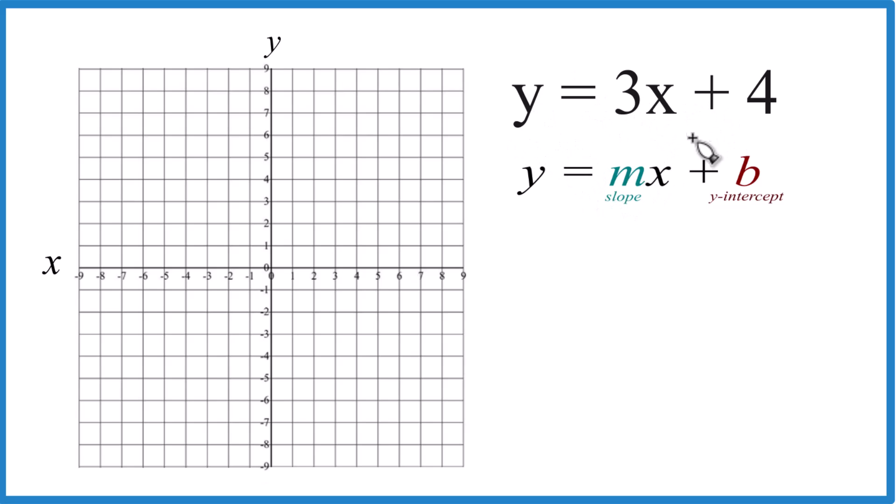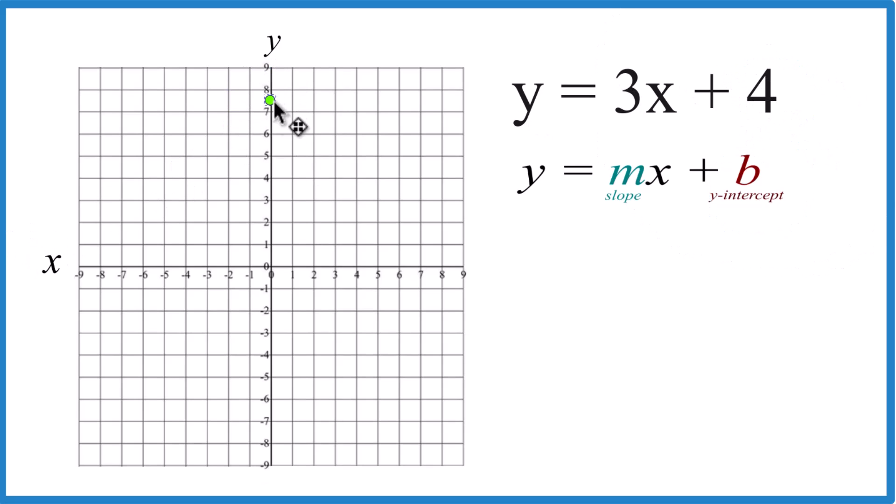So y equals 3x plus 4. With our y equals mx plus b, slope-intercept form, b is going to be 4. So we just go over to the y-axis, down to 4. That's our first point. That's where the line y equals 3x plus 4 crosses the y-intercept.